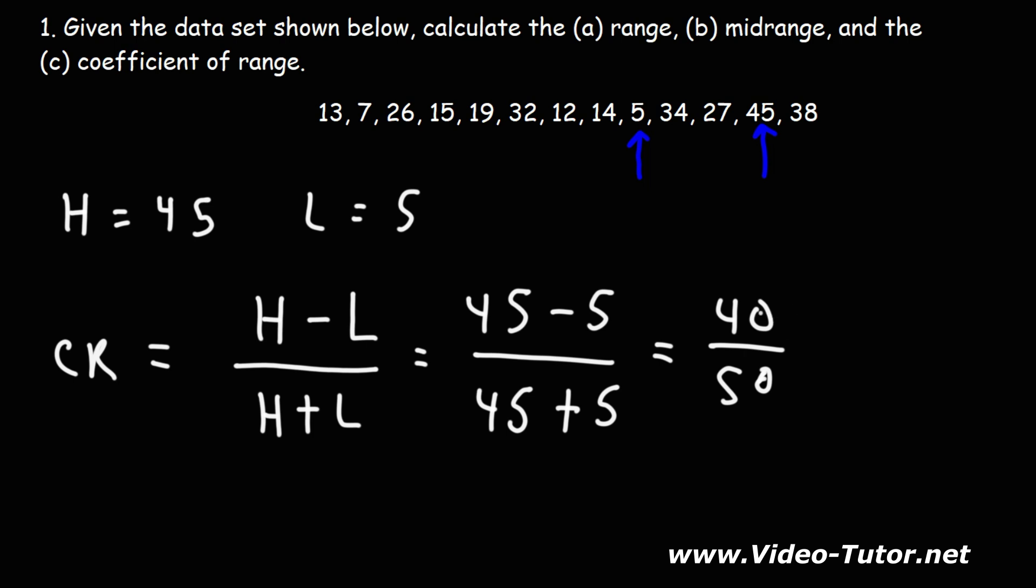If you divide both numbers by 10, you can cancel a zero. This reduces to 4 over 5, which as a decimal is 0.80 or 0.8. So that's going to be the coefficient of range.